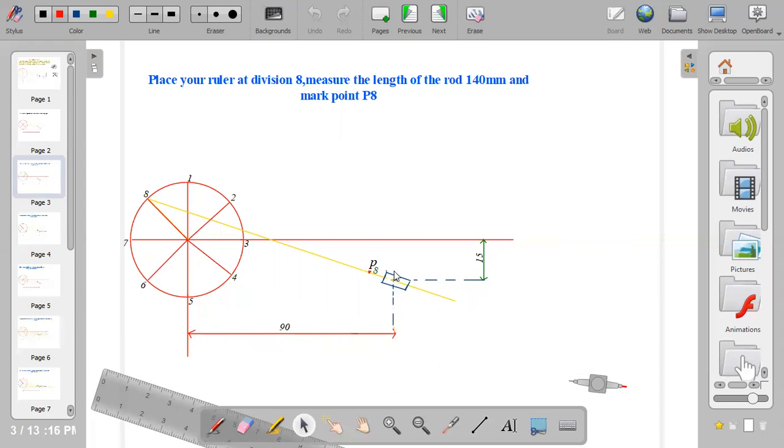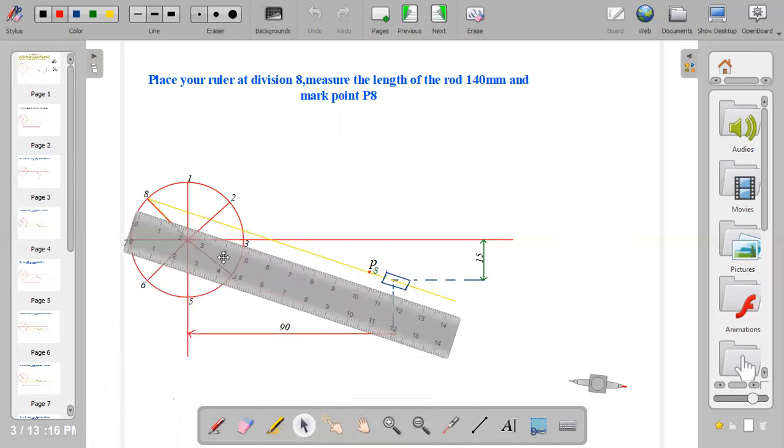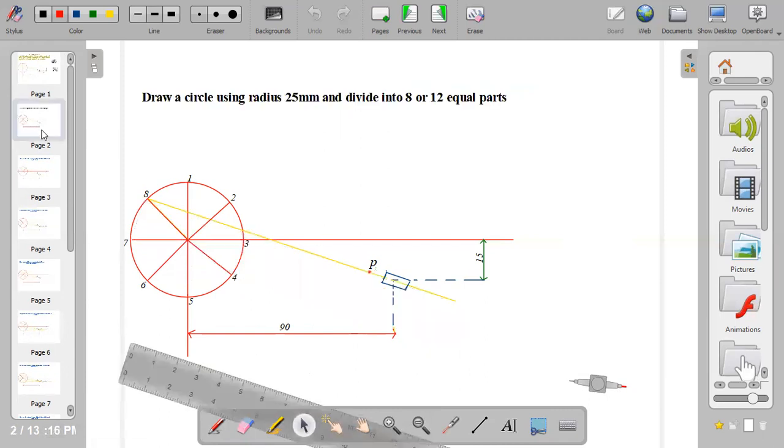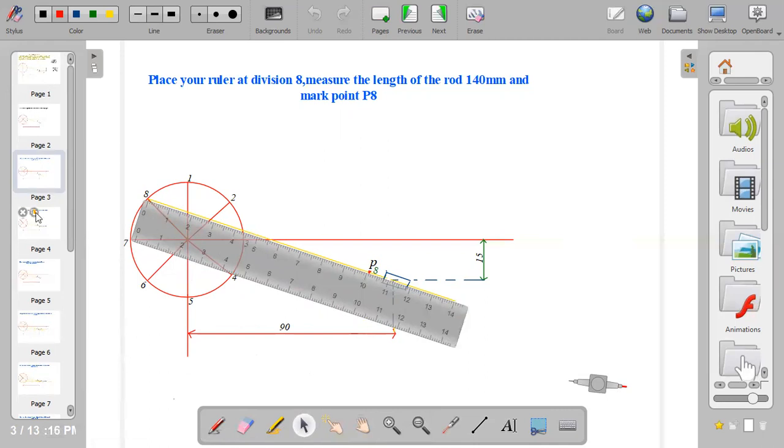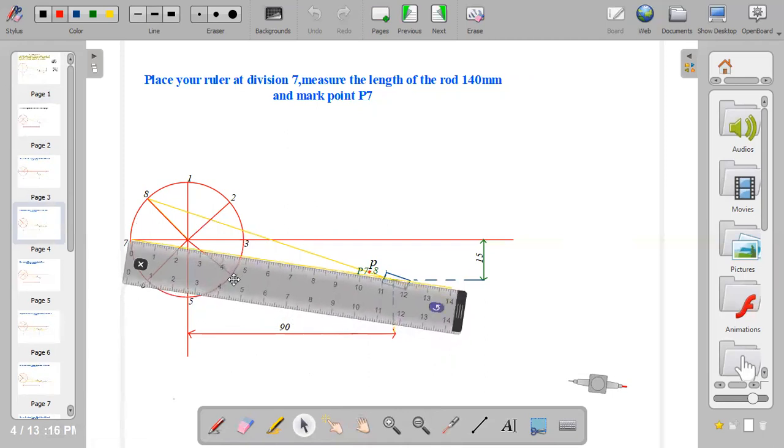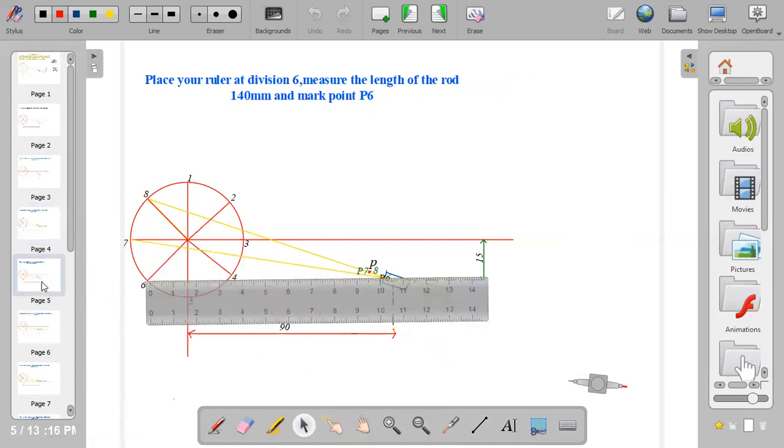After you have fixed the pivot, from division 8, which is the starting point, draw your rod with a length of 140mm. After you have measured 140mm, at 100mm dot it and put P8. Then move on to division 7. At division 7, place your ruler and measure 140 the same way, then dot 100mm and put P7.